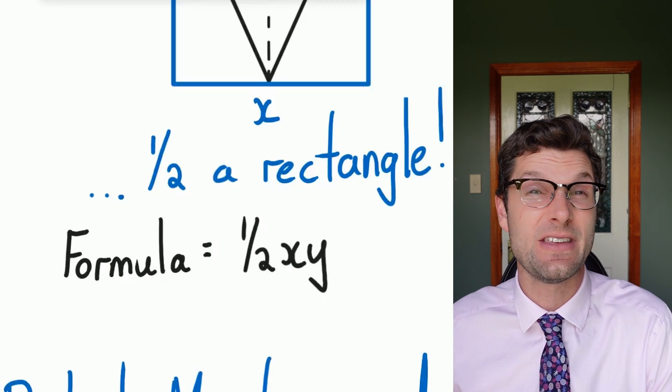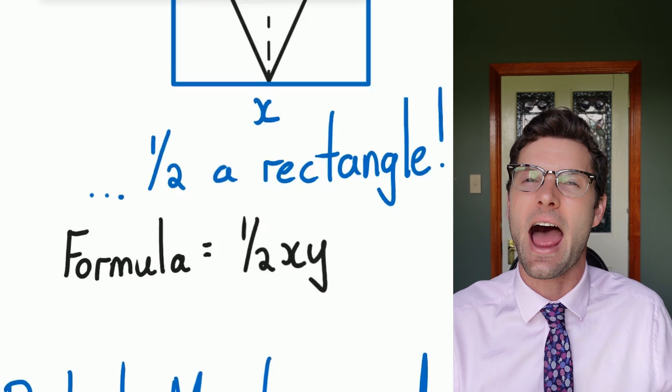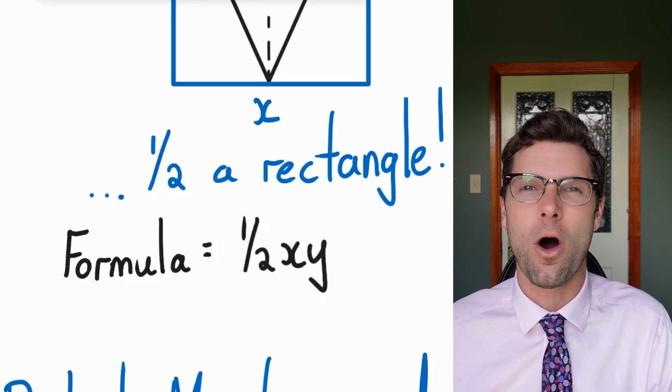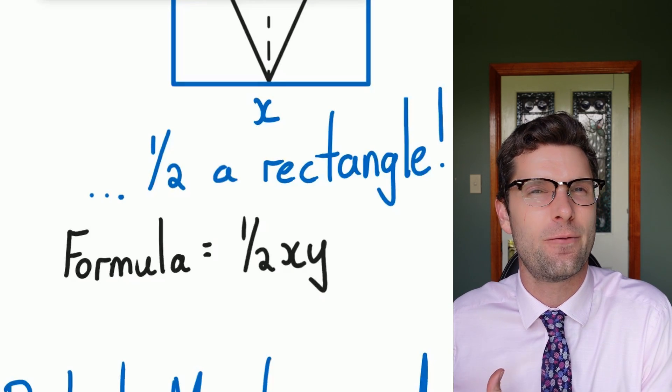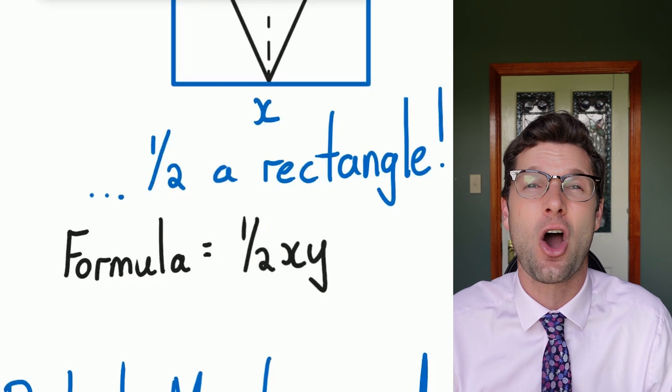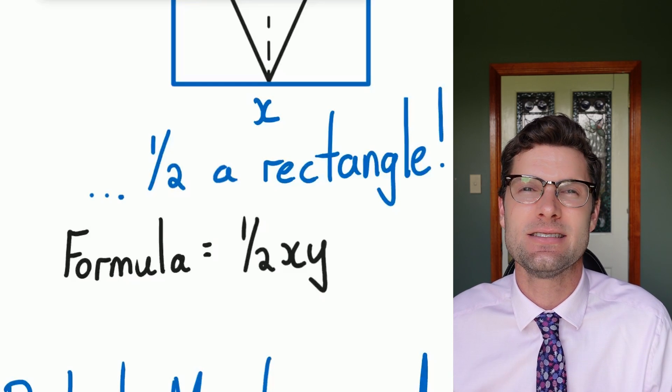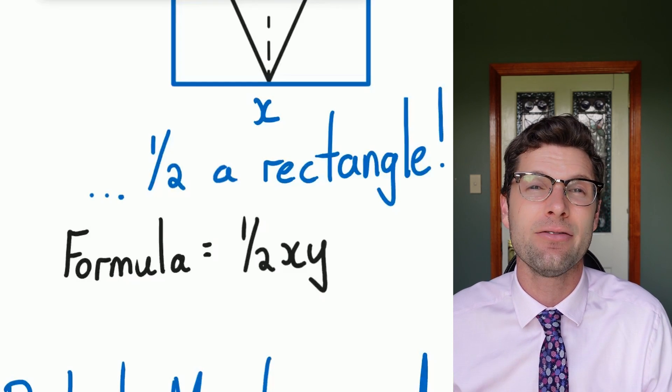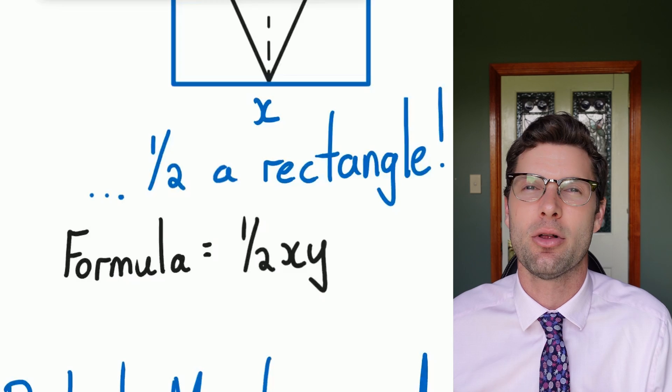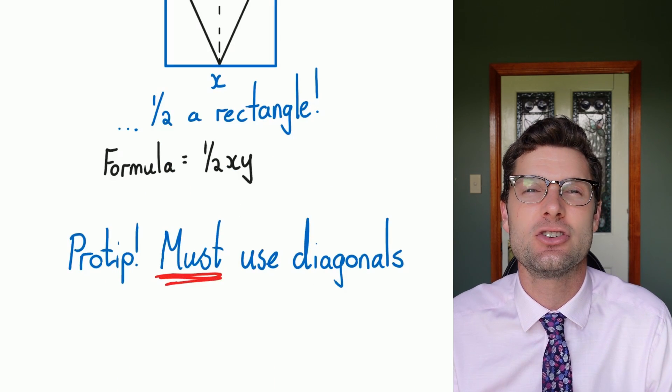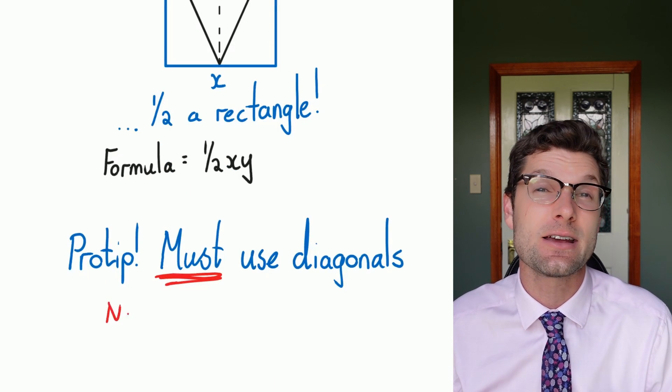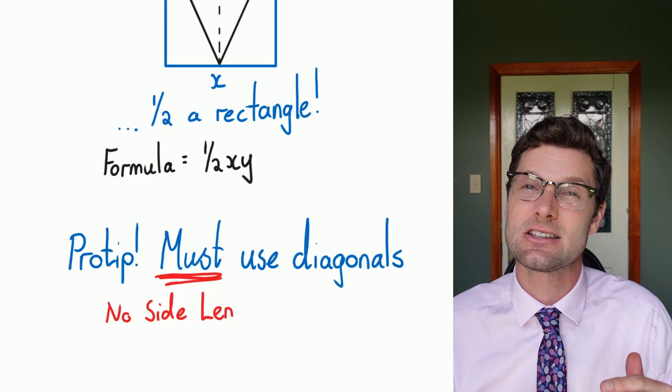So the formula comes from this kind of visualization. As long as you've got the X and the Y, we just know that if we put a rectangle around it, the kite's going to take up half that space. So the formula is just a half multiplied by X multiplied by Y. Just making sure again, the only way you can make a mistake here is if you're using the side lengths.